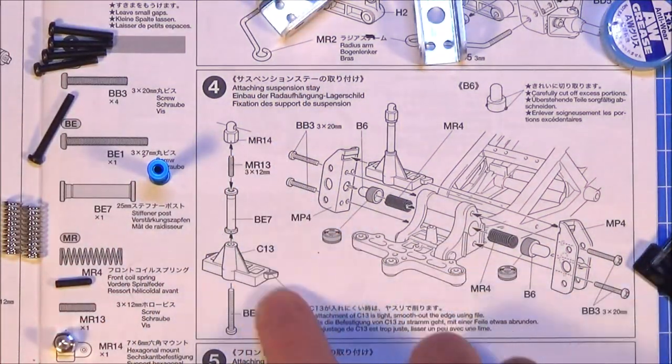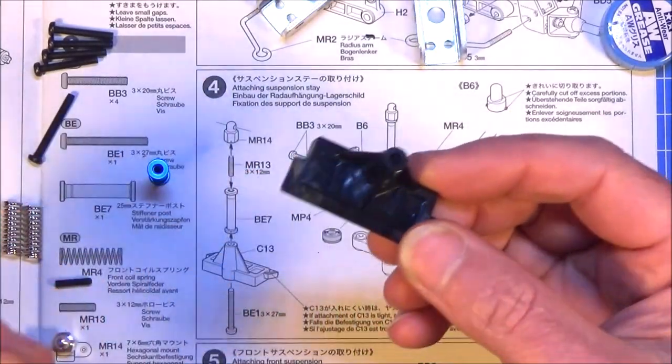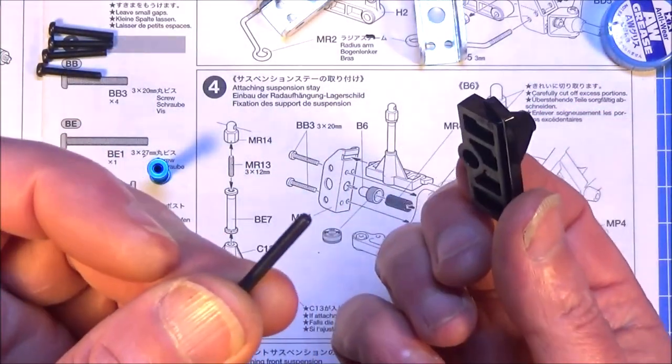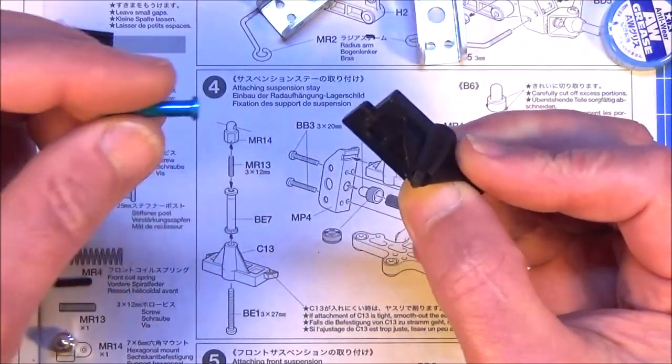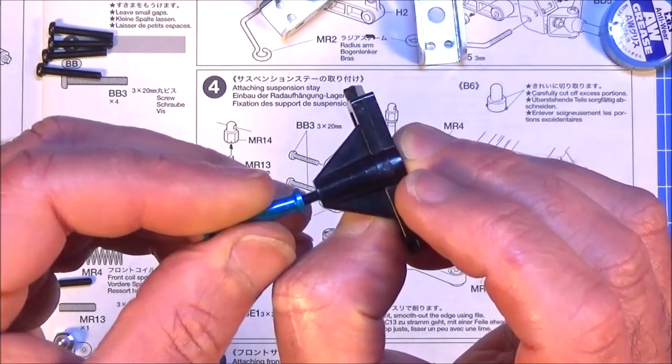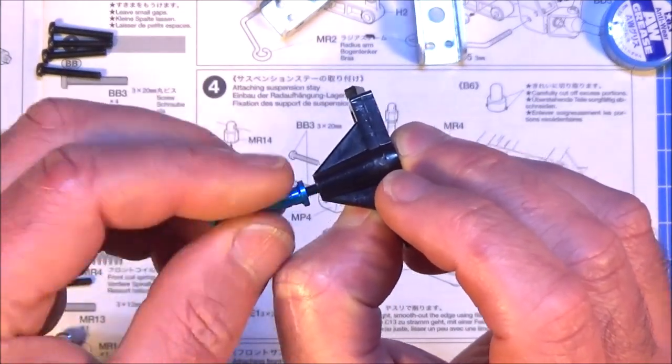So you need part C13, black plastic part. 27mm screw from underneath. And then you want this BE7 which is your nice blue anodised aluminium post.